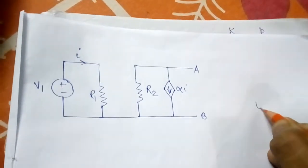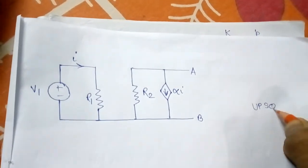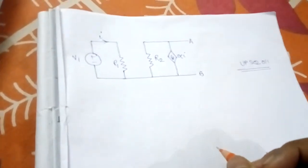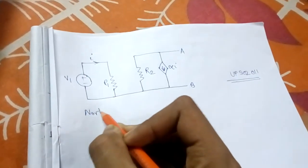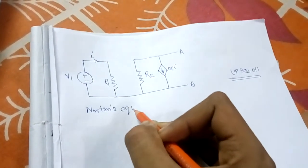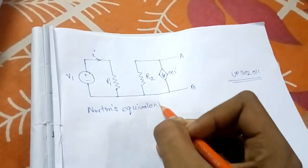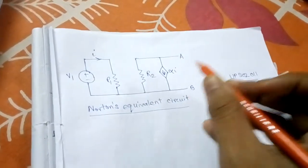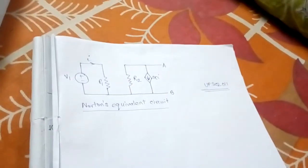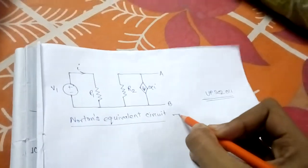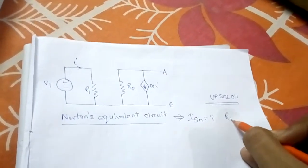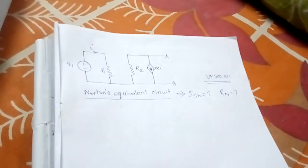This question was asked in UPSC 2011. We have to find Norton's equivalent circuit from the given circuit, which means we have to find the value of I_sh and the value of R_n.